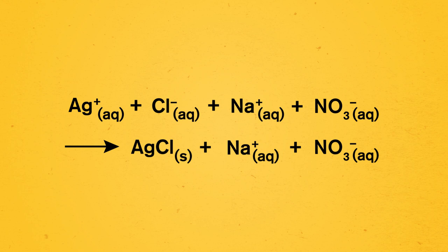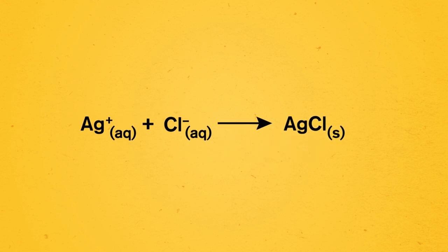If we go back to our first reaction example in this episode, we can follow the same process to simplify it down to its net ionic equation. We'll cross out the spectator ions nitrate and sodium to get a simplified reaction showing the generation of the silver chloride precipitate.